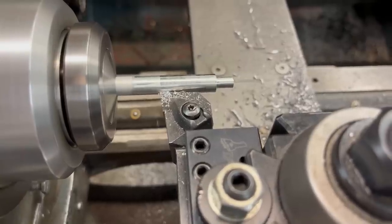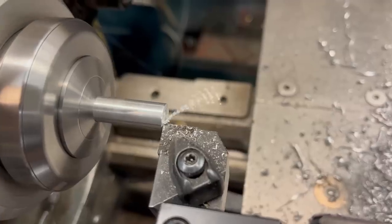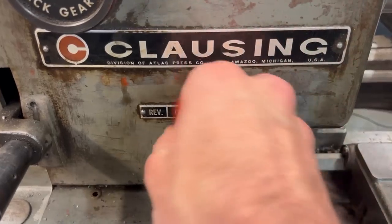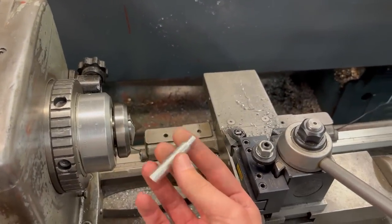I'm taking a quick trip to the lathe now to machine the shaft for the control knob. It'll be super simple, 3-8 diameter for most of it, with one end at quarter inch to fit into the outer knob.